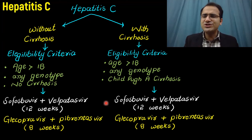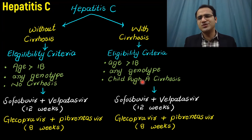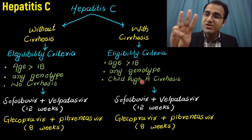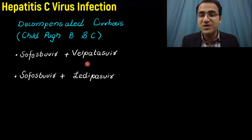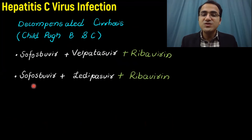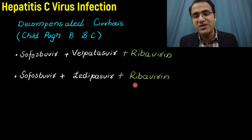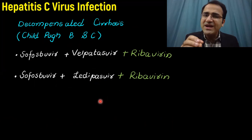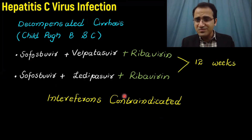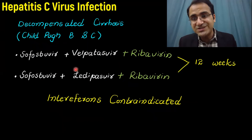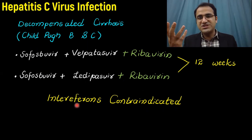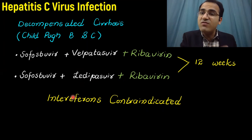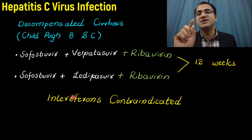For patients with decompensated severe cirrhosis — Child-Pugh B or C — a three-drug combination is used: sofosbuvir plus velpatasvir combined with ribavirin, or sofosbuvir plus ledipasvir combined with ribavirin, given for 12 weeks. Importantly, interferons are absolutely contraindicated in decompensated cirrhosis — even if direct-acting antivirals are unavailable, do not use interferons in these patients.